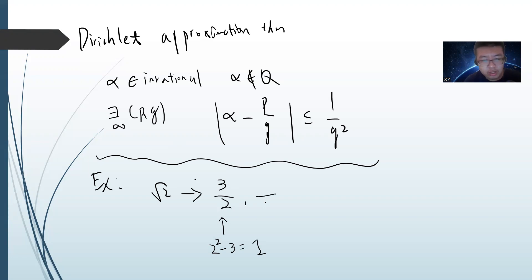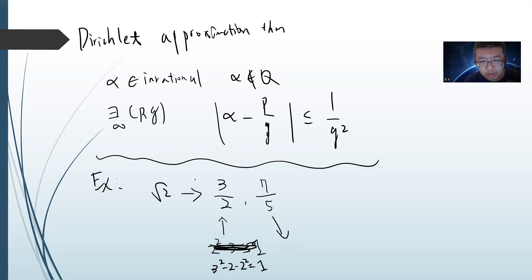The next approximation should be 7/5. You can check that 7² - 2×5² = -1. And you can see that 5 = 3 + 2, and then 7 + 5 = 12. The numerator should be 7 + 5 + 5 = 17, so the next one is 17/12.